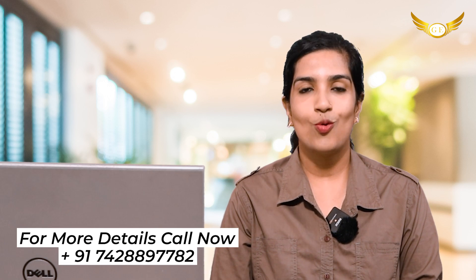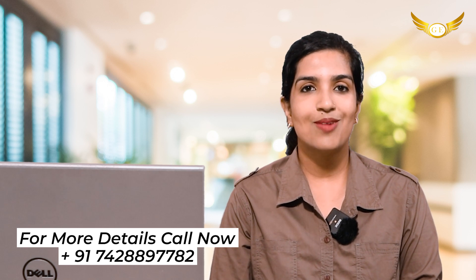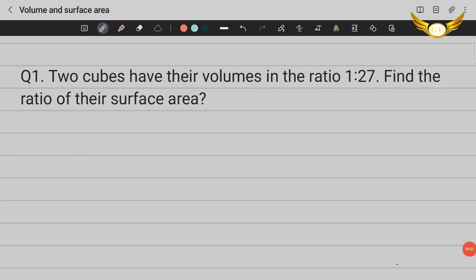In my video today, I'm going to be solving more questions from the subtopics in maths, basically for your preparation for the pilot program written examination. The topics that we're going to see today are volumes and surface area and heights and distances. So the first question from the topic volume and surface area is two cubes have their volumes in the ratio 1 is to 27. Find the ratio of their surface area.